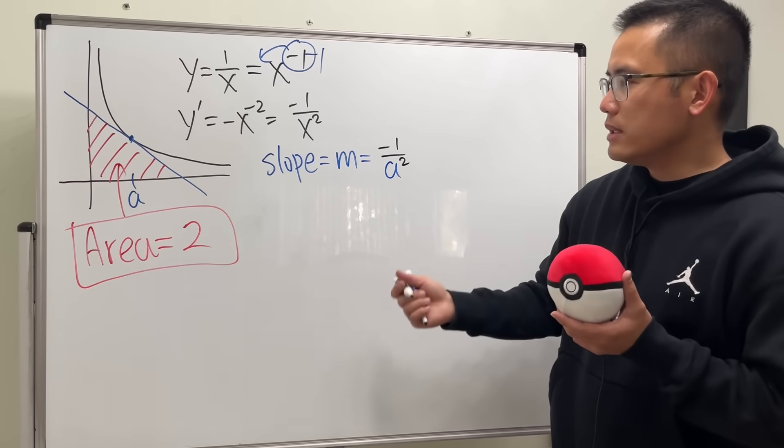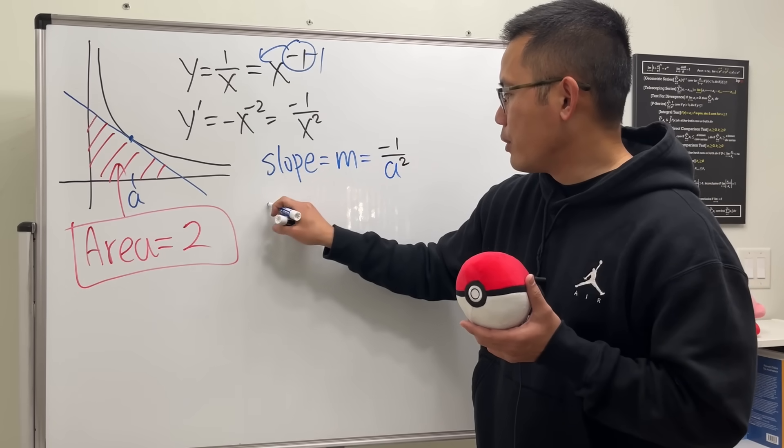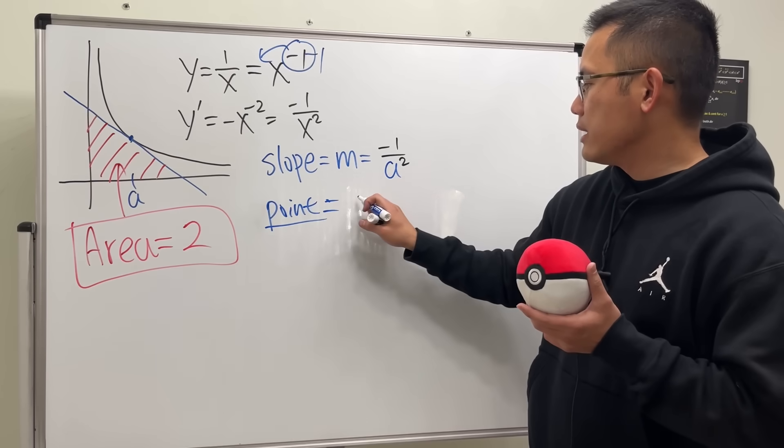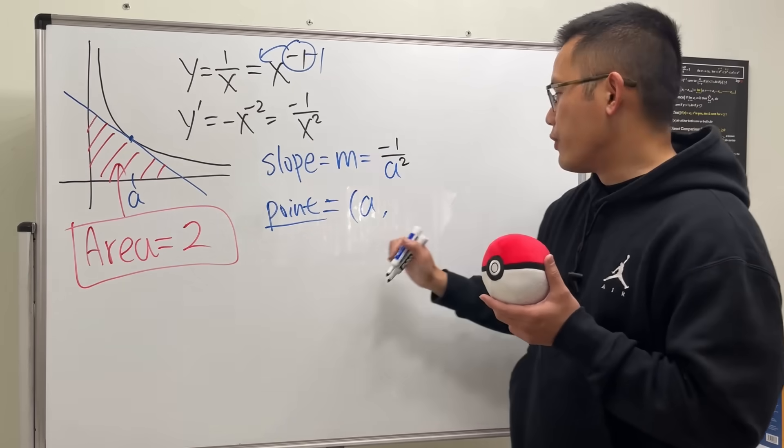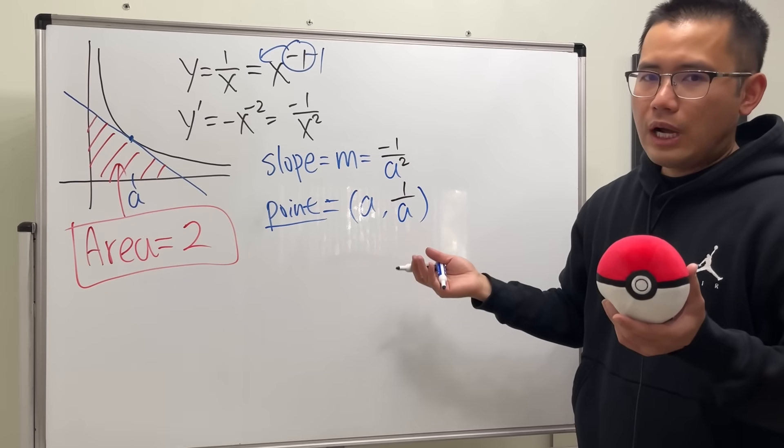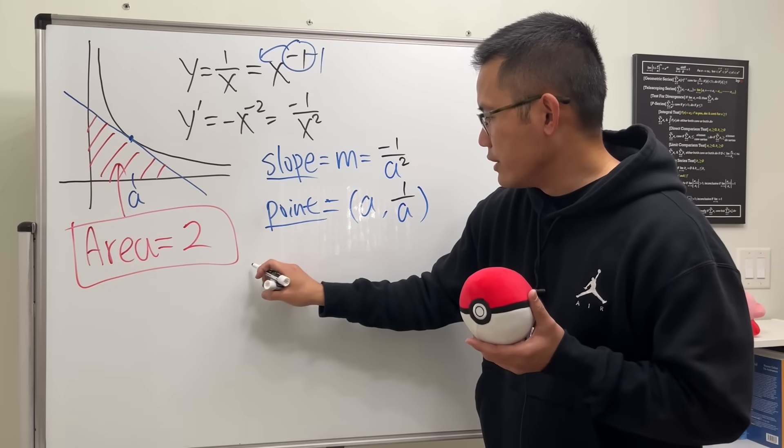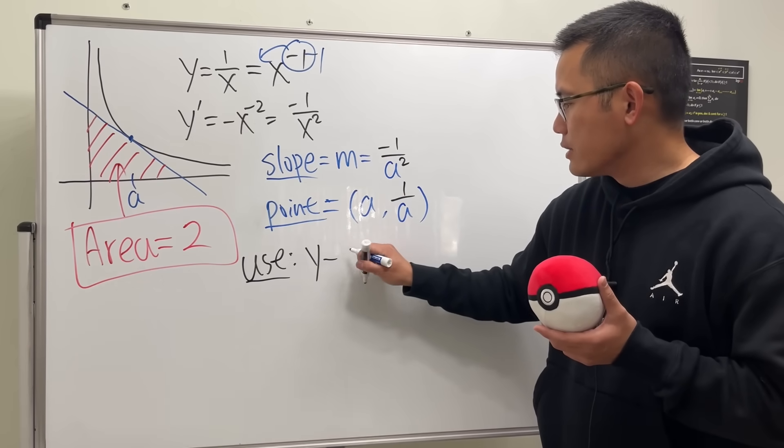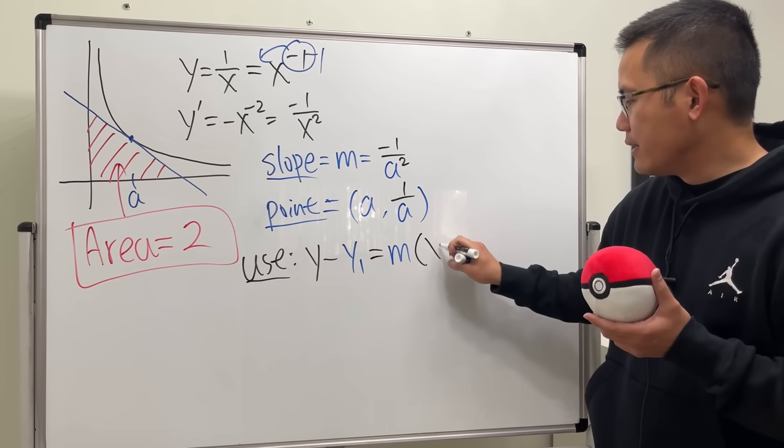And the point is just that we put the A back to the y equation. So here is the point. We just have to plug that in. So we get the x value being equal to A, but the y value is going to be 1 over A. So that's okay. Cool. And let's use our point slope form of the line. We're going to use the point slope form, which is y minus y1 equals M times x minus x1.